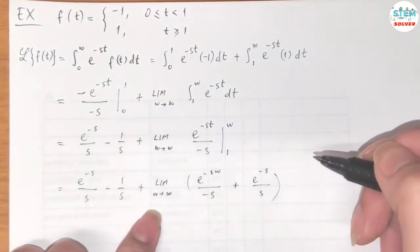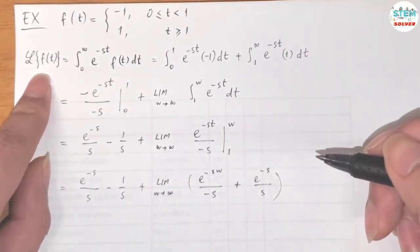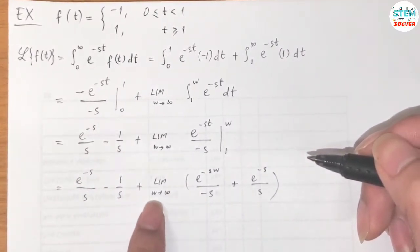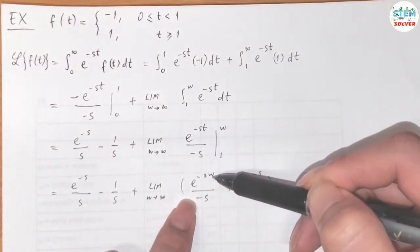The Laplace transform has to converge. And as w goes to infinity, this will go to negative infinity, e to negative infinity.